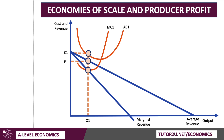So at output Q1, they're charging a price P1, but their unit costs — their average costs — are actually higher, leading to a loss, an economic loss, shown by the green shaded area. Often firms operating at a low scale of production, perhaps new entrants in the market, will have higher costs because they haven't yet achieved internal economies of scale.